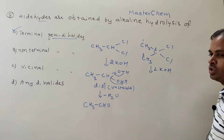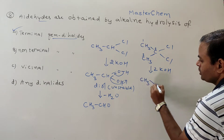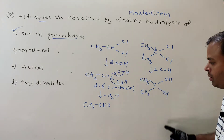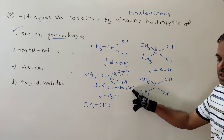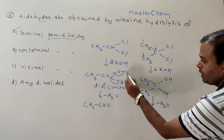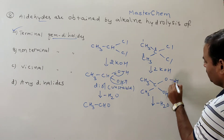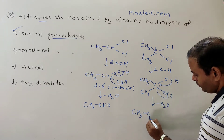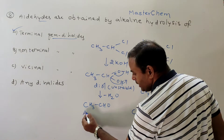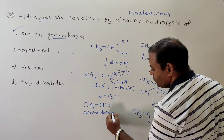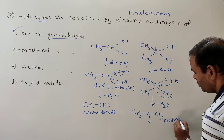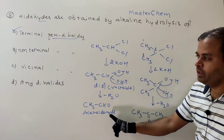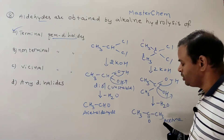With 2 KOH (alkaline hydrolysis), it gives CH₃C(OH)₂CH₃ — again a diol with two OH groups on the same carbon, which is unstable. Loss of H₂O takes place in the same manner, giving CH₃COCH₃ — acetone. So terminal gem dihalide gives aldehyde, and non-terminal gem dihalide gives ketone.